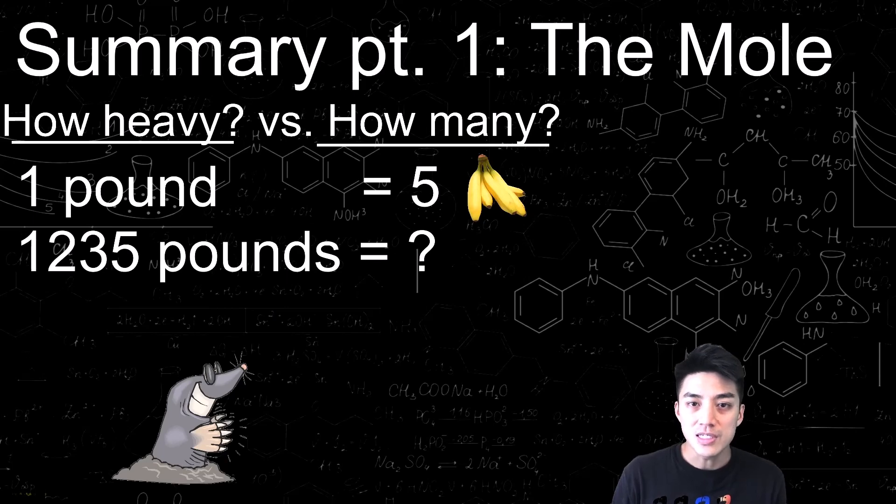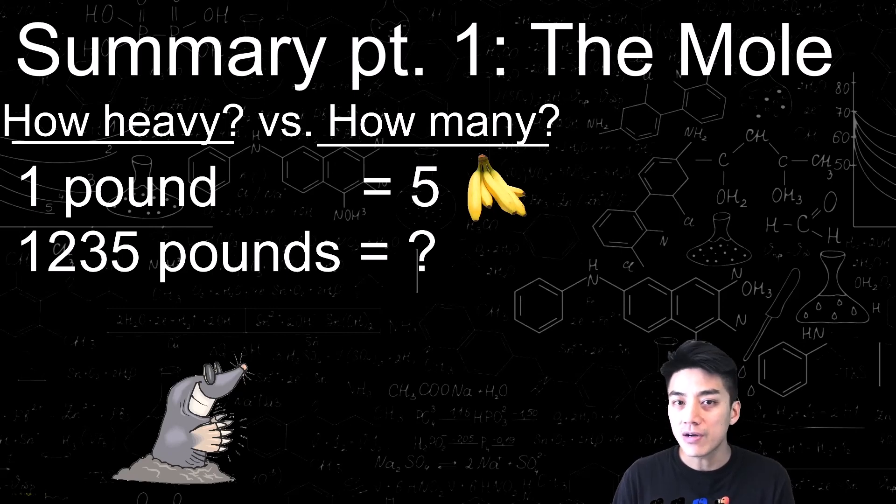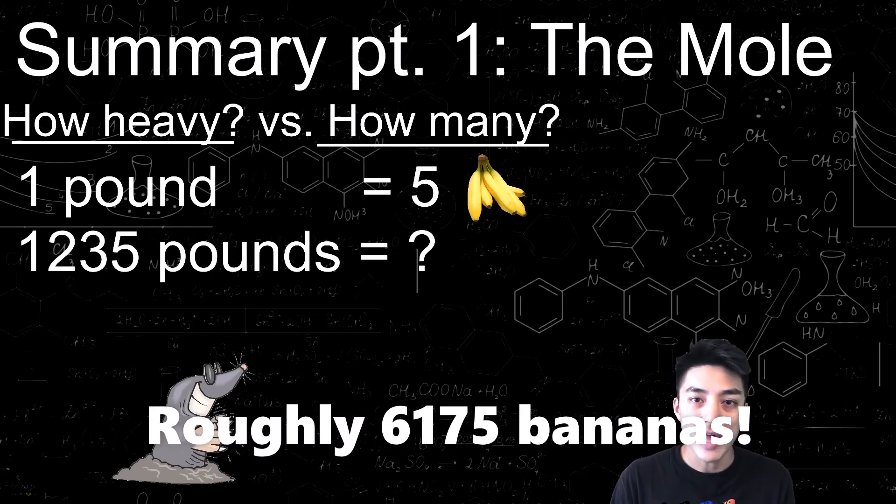The mole in chemistry can easily be understood with the concept of how heavy versus how many. So if you apply this to just simple things like bananas, for example, if I know that 1 pound of bananas will have 5 bananas in it, that means if you handed me a bag of bananas that weighed 1,235 pounds, I can have a very accurate estimate of how many bananas are in that bag without counting or even opening the bag.